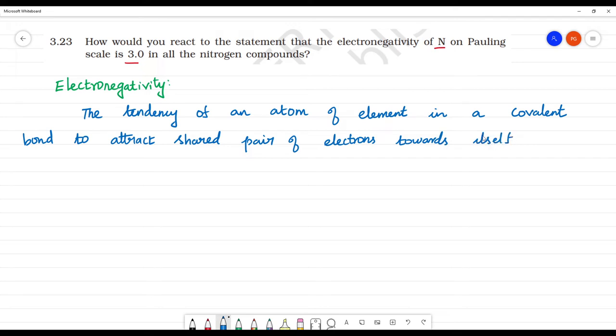For example, if element A bonds with element B to form a covalent bond, they share electrons. The electrons belong to both A and B. If the electronegativity value of A is greater than B, then the electrons are attracted more towards A.